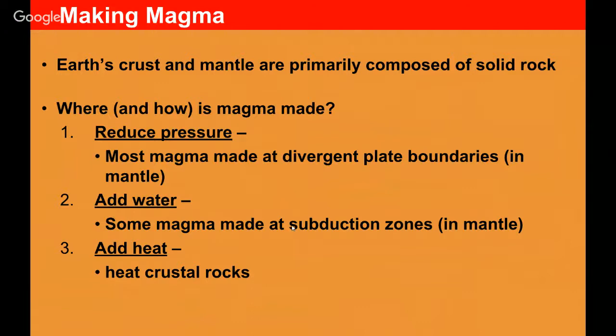As it is driven off the subducting plate by heat, that allows for melting of that hot mantle. It's very much like applying salt to the road during the winter and melting that ice, not allowing that ice to solidify. It's a very similar kind of concept of introducing that water into the mantle and changing the temperature at which it melts and creating magma from that. Finally, of course, the obvious way to create magma is to add heat, and a lot of times you see this at hot spots.